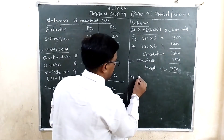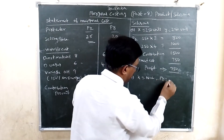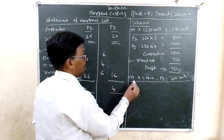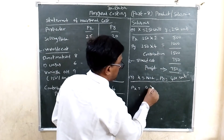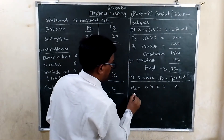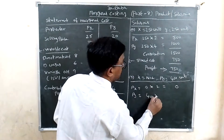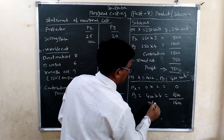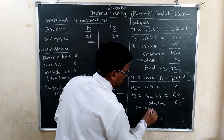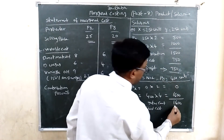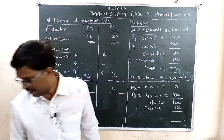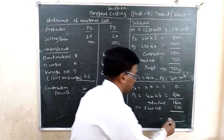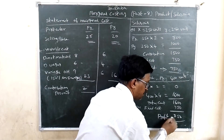Sales Mix B: X is nil, Y = 400 units. Contribution from X: 0 × 2 = 0. Contribution from Y: 400 × 4 = 1600 rupees. Total contribution = 1600 rupees. Less fixed cost = 750 rupees. Profit under Mix B = 850 rupees.